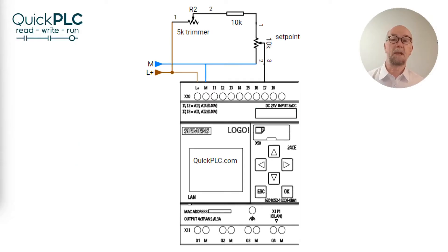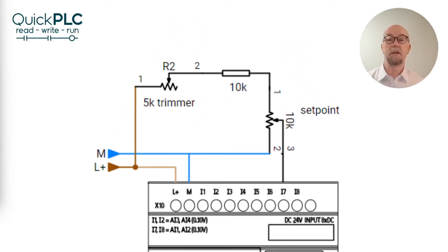If you want to calibrate the pot a bit better, you could go for a 10k resistor and a 5k trimmer pot. Turn the 10k pot to the max and adjust the trimmer to get 1000 on the analog input monitoring display on the Logo. You can use this technique to attenuate any analog voltage over 10 volts. Note that the analog inputs are protected up to 28.8 volts, the same as in digital mode.